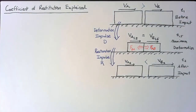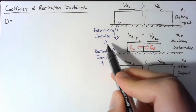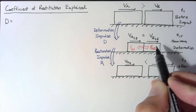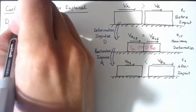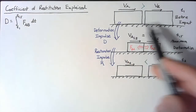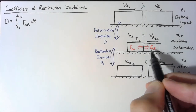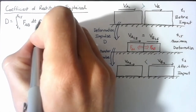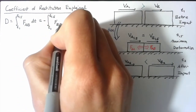Now let's define these impulses using the definition from a couple of videos ago. The deformation impulse D is the integral over time of the force. To have a positive impulse, we need a force in the positive x direction, so we look at the force of A acting on B. We integrate from time 1 to time 1.5 of the force of A acting on B with respect to time. There may be some interval where they aren't touching and the force is zero — that's fine. The force of B acting on A is equal and opposite, so we can write that as the negative deformation impulse over the same time period.